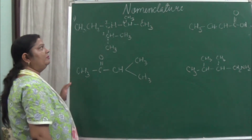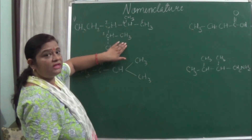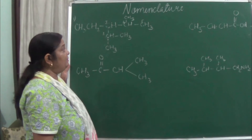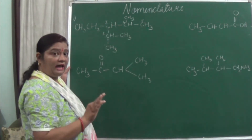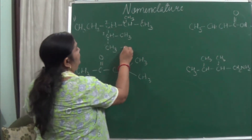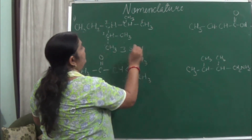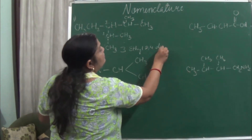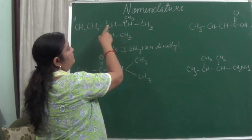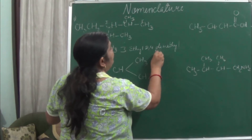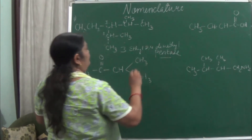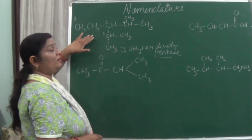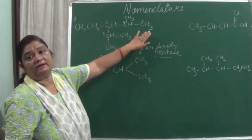Either side gives the same answer since the substituents are at the same positions. So let us count from one side: 1, 2, 3, 4, 5. Now how will you name it? You know the second rule — alphabetical order must be followed. Ethyl comes before methyl alphabetically, so ethyl gets priority. You write 3-ethyl first, then 2,4-dimethyl. The chain has 5 carbons, so the parent is pentane: 3-ethyl-2,4-dimethylpentane.